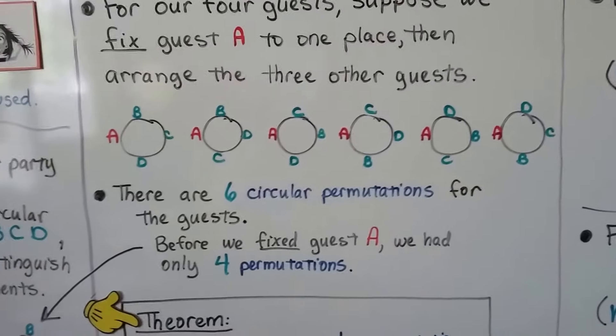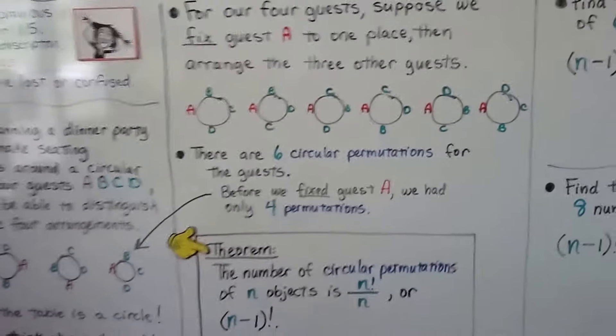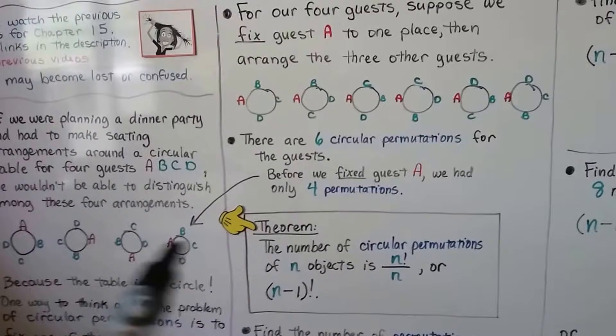There are six circular permutations for the guests. And before we fixed guest A, we had only four permutations.